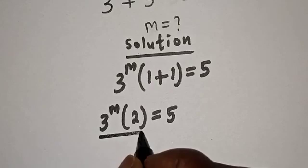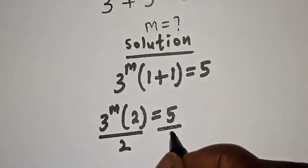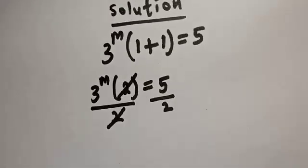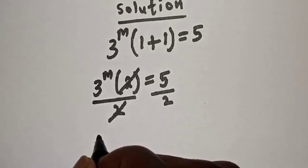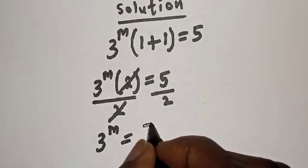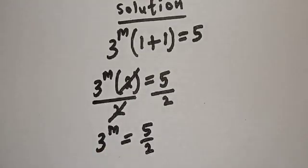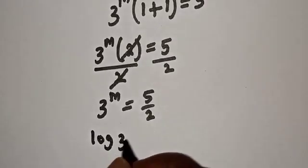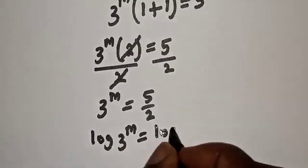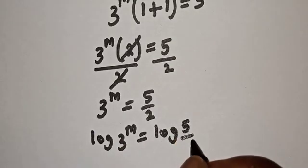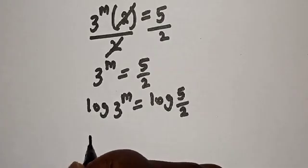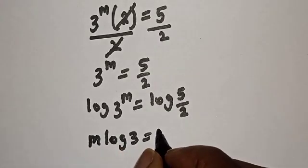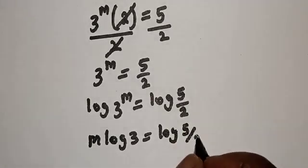Let's divide both sides by 2, giving us 3 raised to power m equals 5 over 2. Now let's take the log of both sides: log(3^m) equals log(5/2).